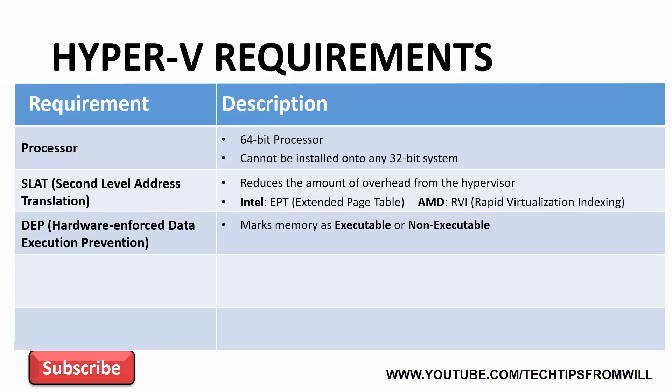Hardware-Enforced Data Execution Prevention is essentially a form of security. DEP uses the processor in your system to mark memory as either executable or non-executable. In a nutshell, this prevents code from being executed in memory unless the memory location explicitly contains executable code. Clever hackers are able to target certain systems by inserting executable code into non-executable memory locations, and Hardware-Enforced Data Execution Prevention is designed to prevent this type of attack.